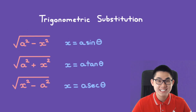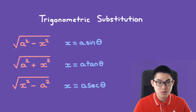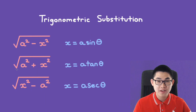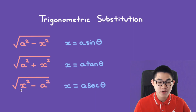There are three formulas that you need to know. When you see the square root of a² minus x² in your integral, let x equal a times sine of theta. If you see the square root of a² plus x², use x equals a times tangent of theta. And the last one is the square root of x² minus a²; in this case, use x equals a times secant of theta.